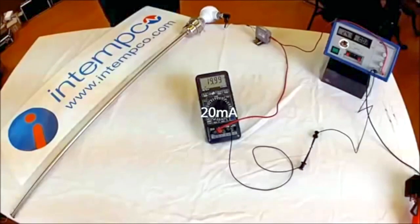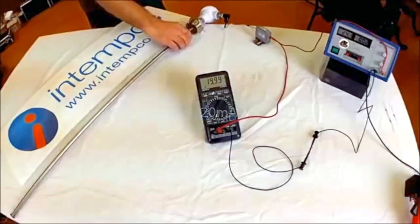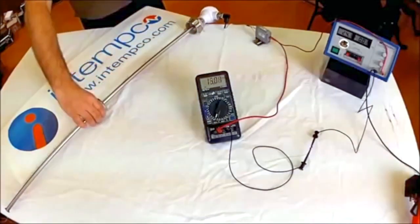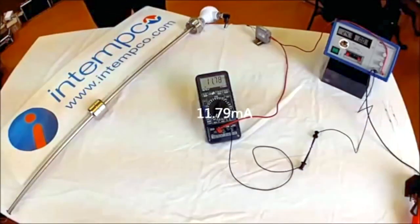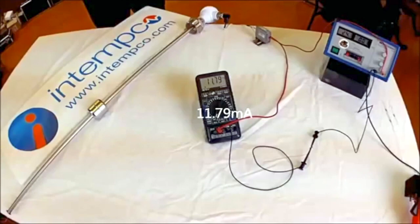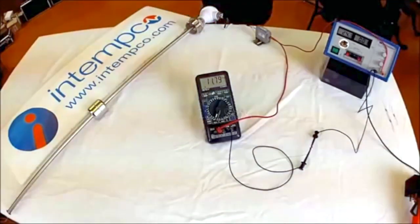If we move to the middle position, you can see that the current indicates approximately 12 milliamps, which is halfway between 4 and 20 milliamps. We will keep the float at that position.